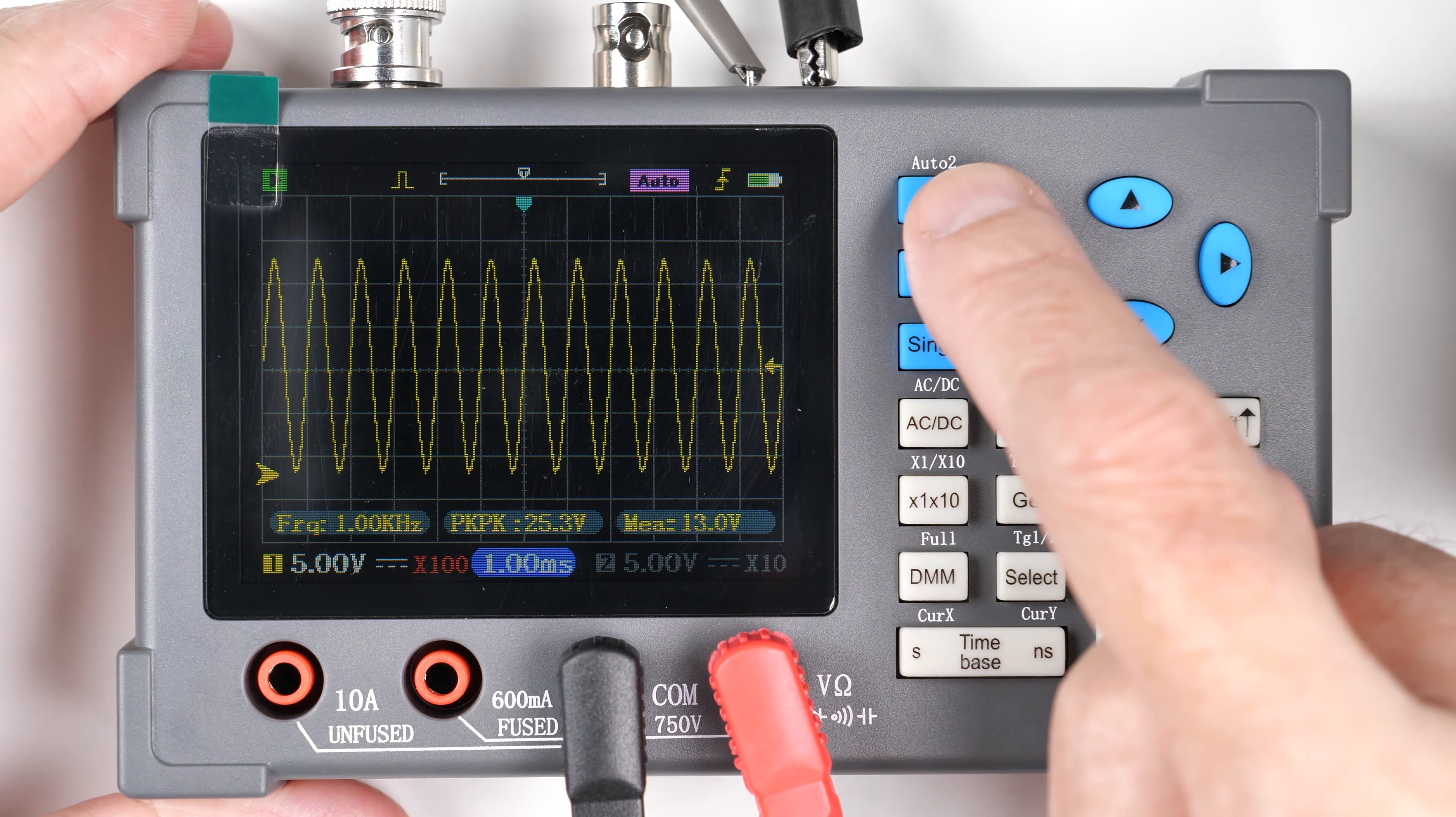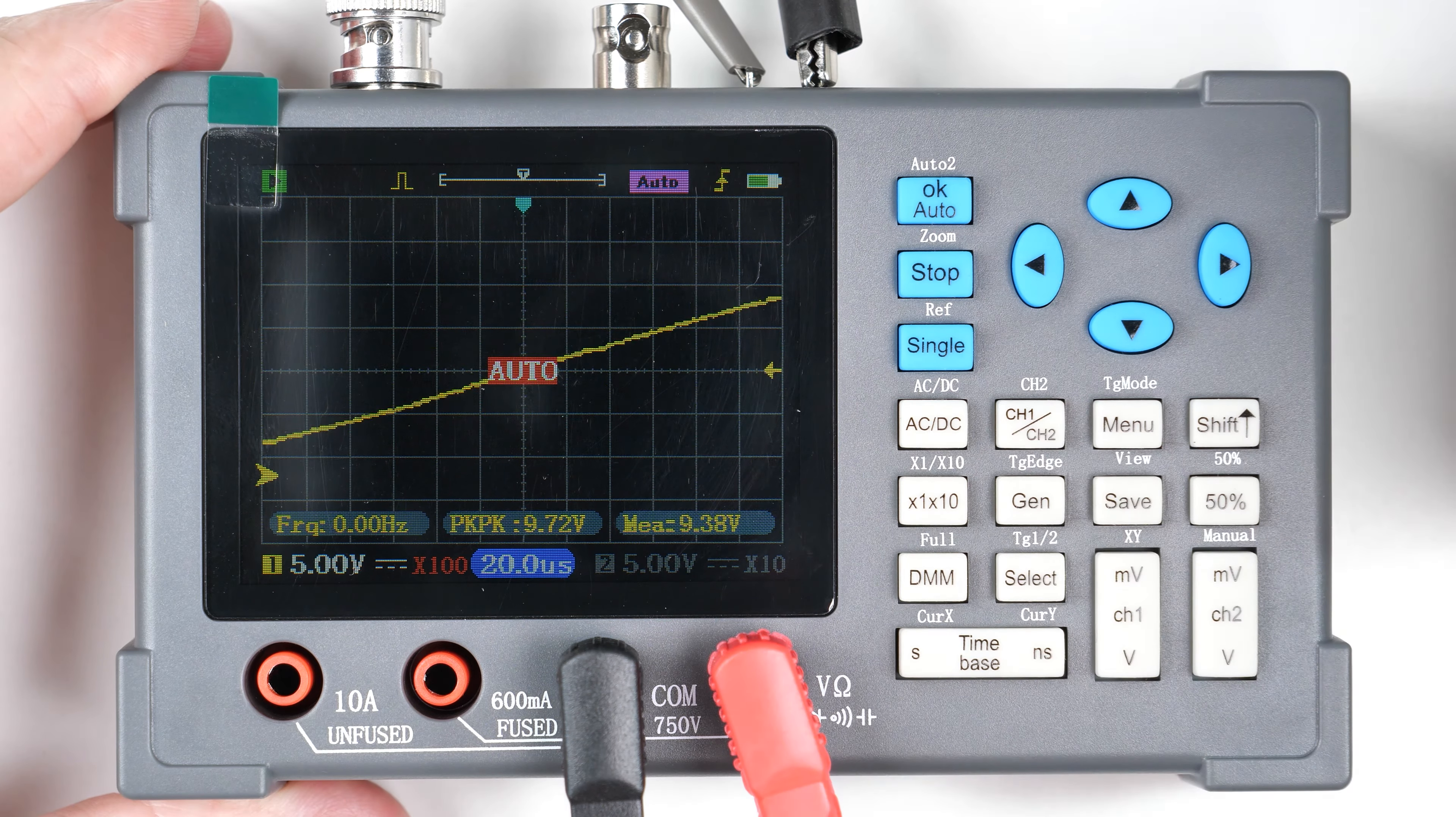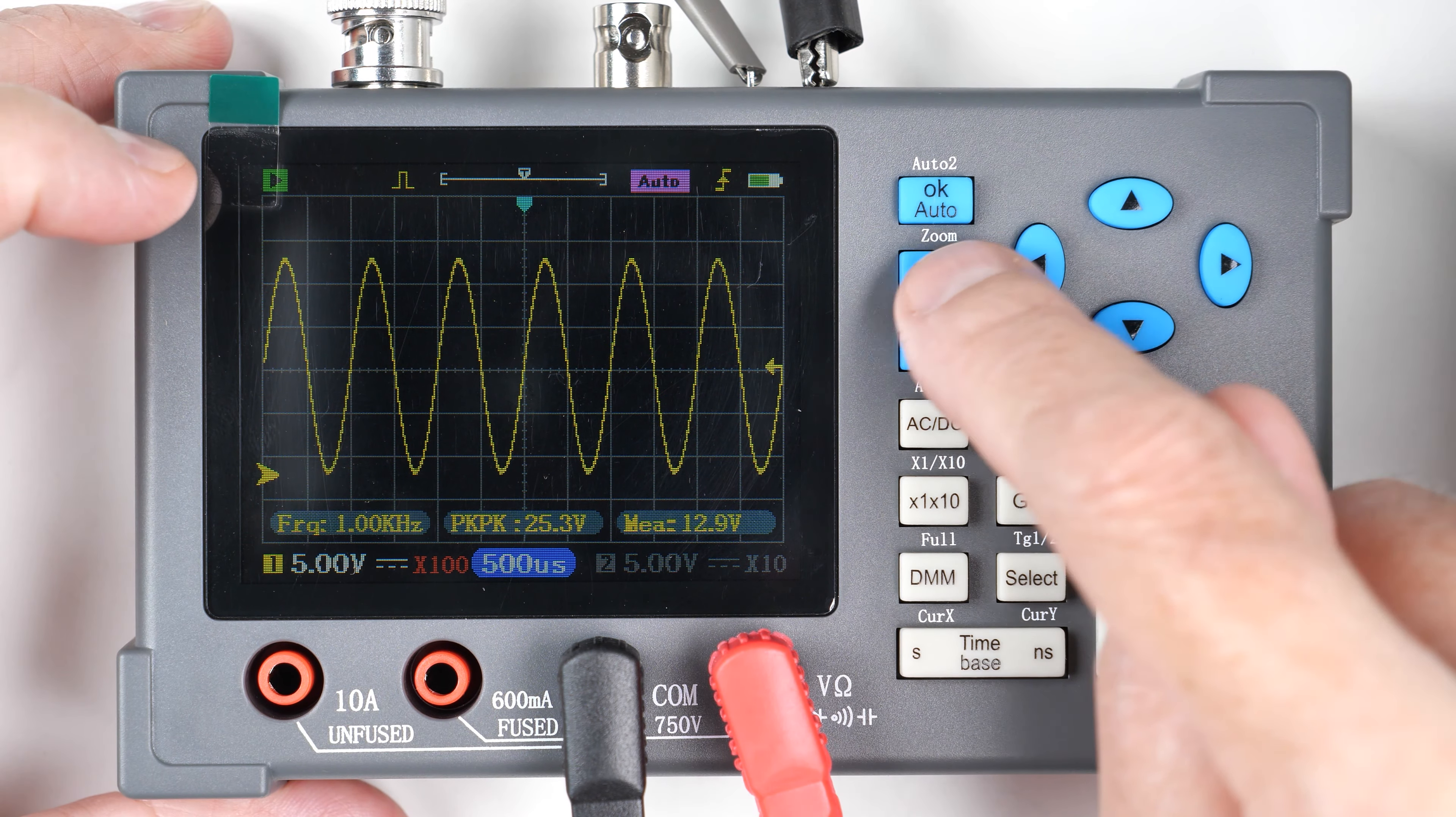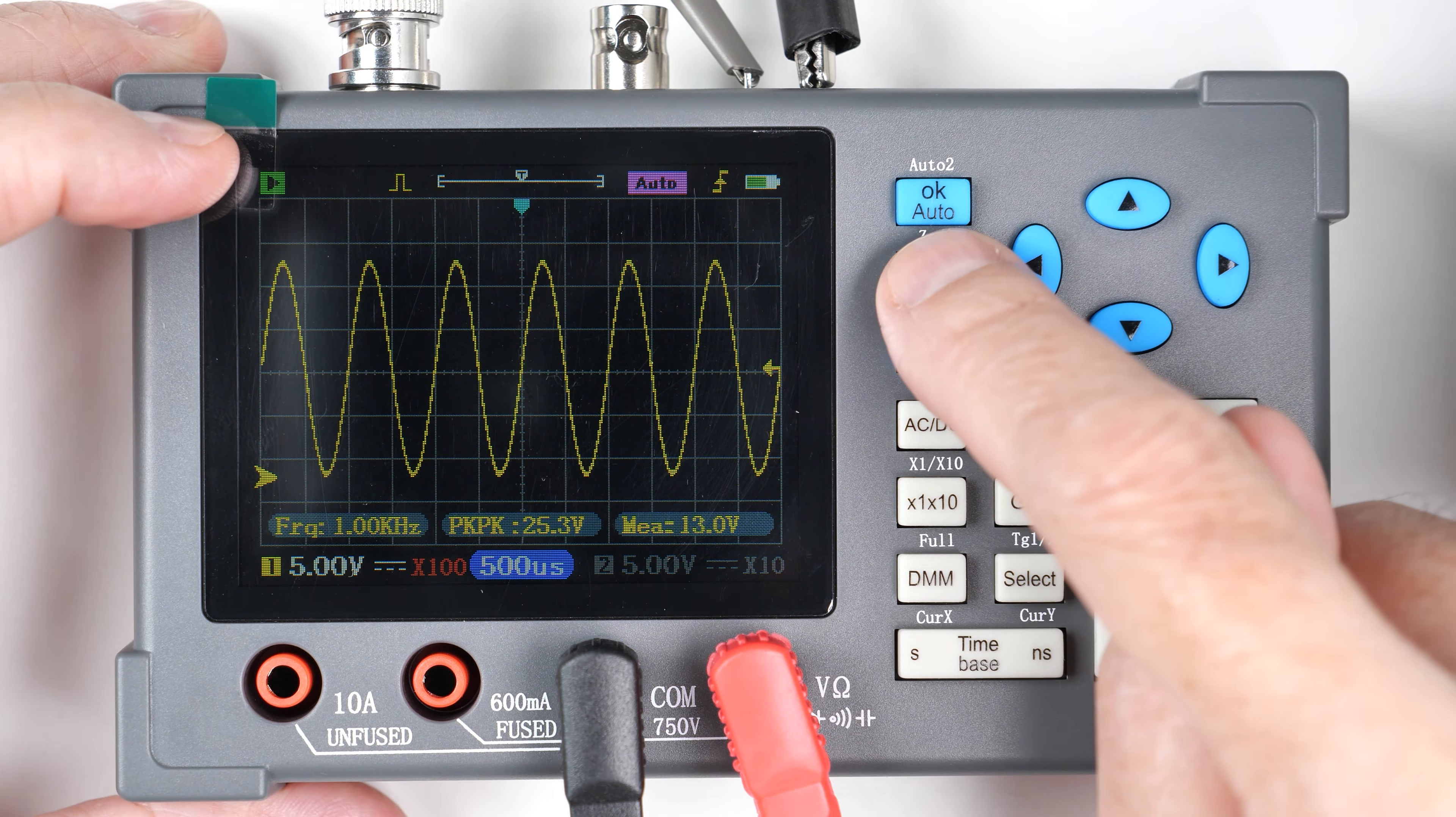It has a lot of the typical things. So it has an auto, so if I deliberately mess up the display, I can punch this and it'll auto display. It has a run stop up here in the corner. Push the wrong button. Run stop, so you can see that turn from play to stop.